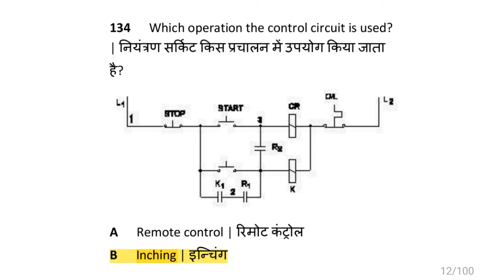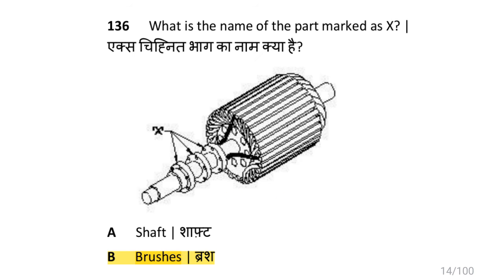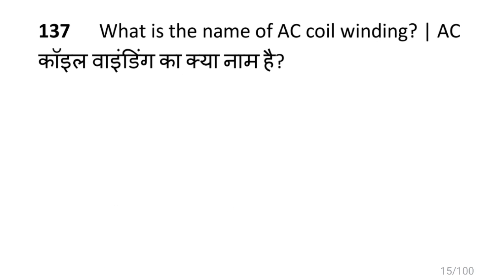The control circuit operation illustrated is inching. The phase displacement between windings in a three phase motor is 120 degrees.